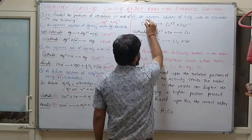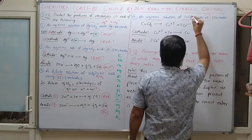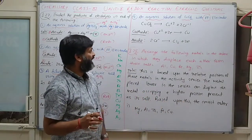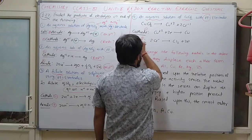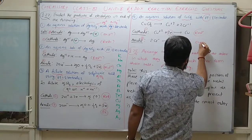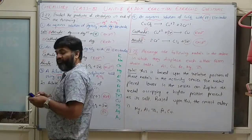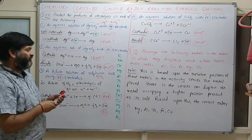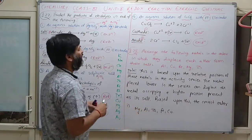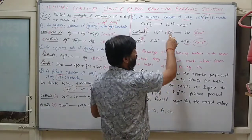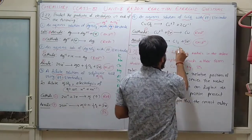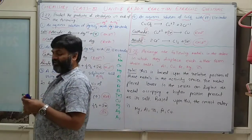Electrolysis of CuCl₂ solution with platinum electrode: CuCl₂ ionizes to give Cu²⁺ and 2Cl⁻. The cathode is negative and anode is positive. Cu²⁺ undergoes reduction at cathode, depositing copper. Cl⁻ is attracted to the anode because anode is positively charged, so Cl⁻ (an anion) moves toward the anode.